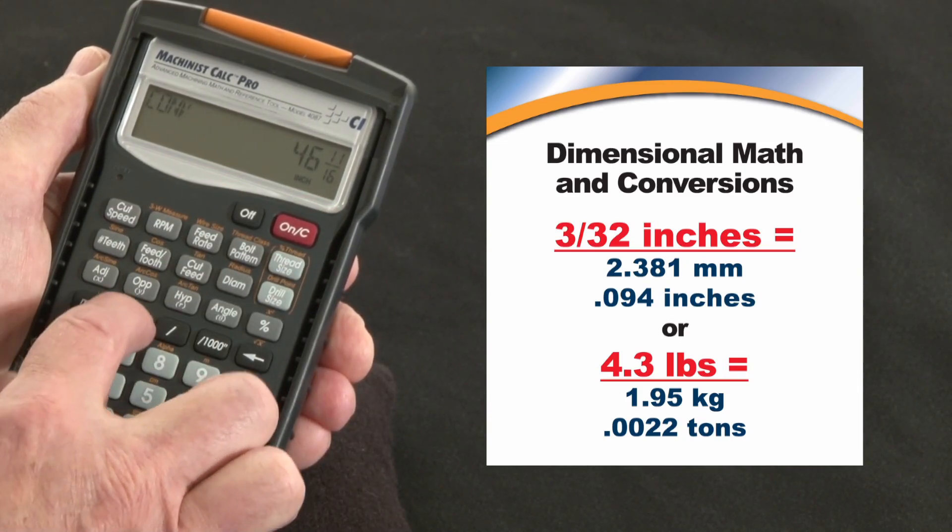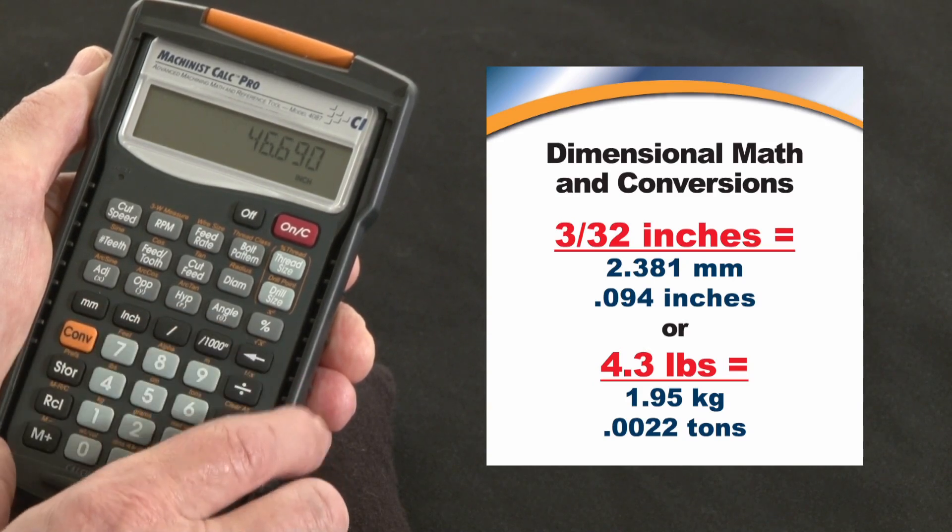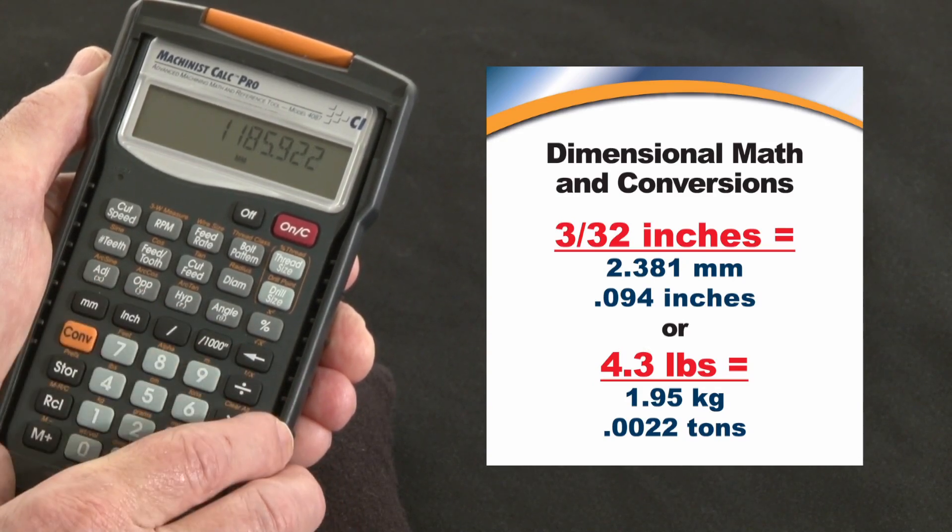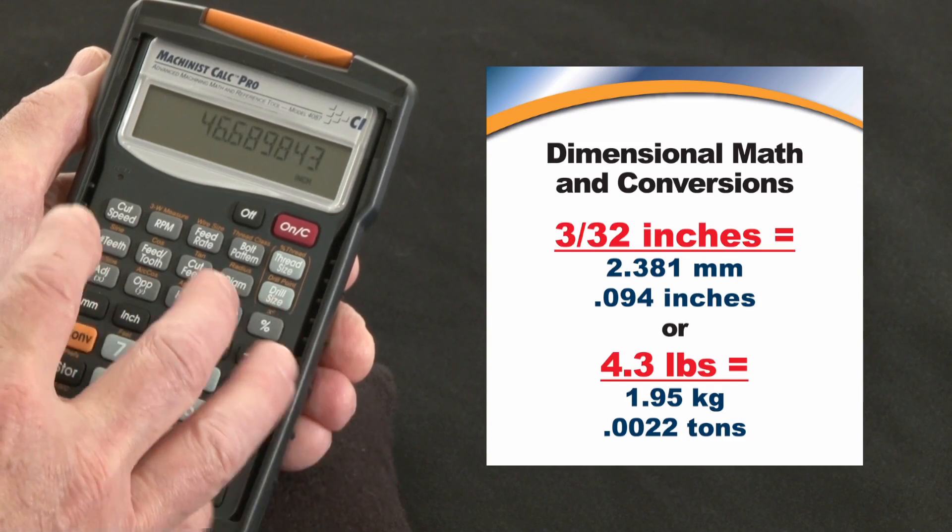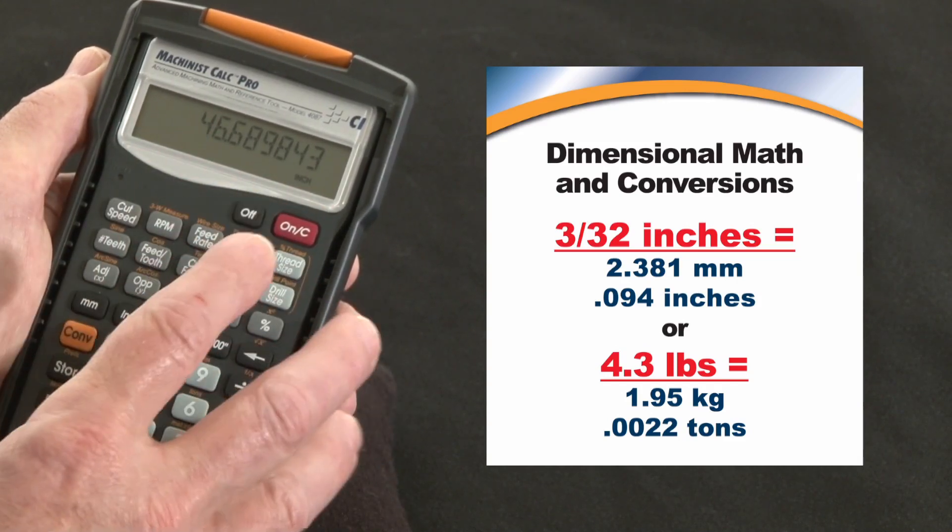If you don't like that format, just hit convert. You can see inches in decimals, inches rounded to thousandths. You can see it in millimeters. You can do these same conversions in linear, area, and cubic numbers.